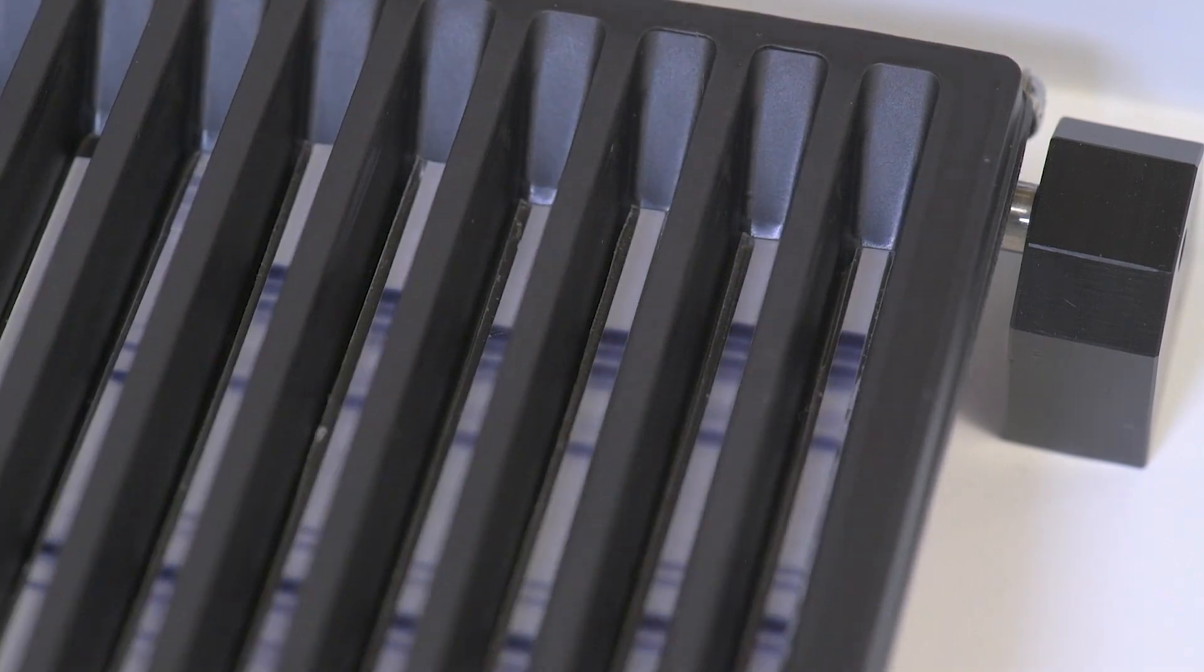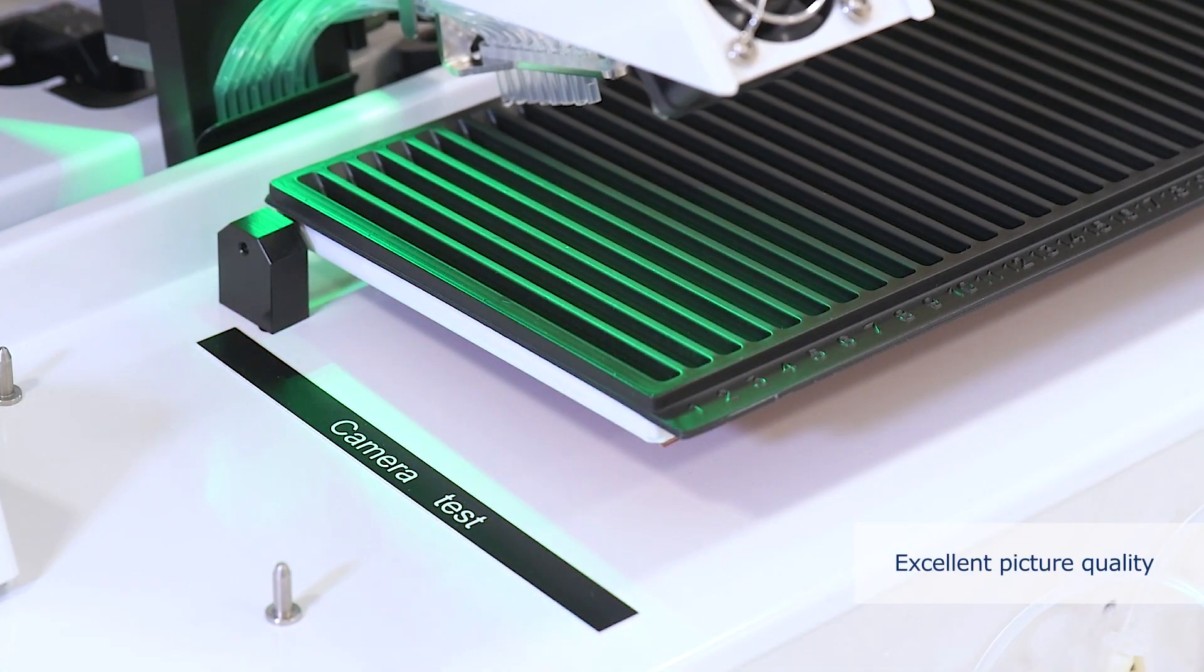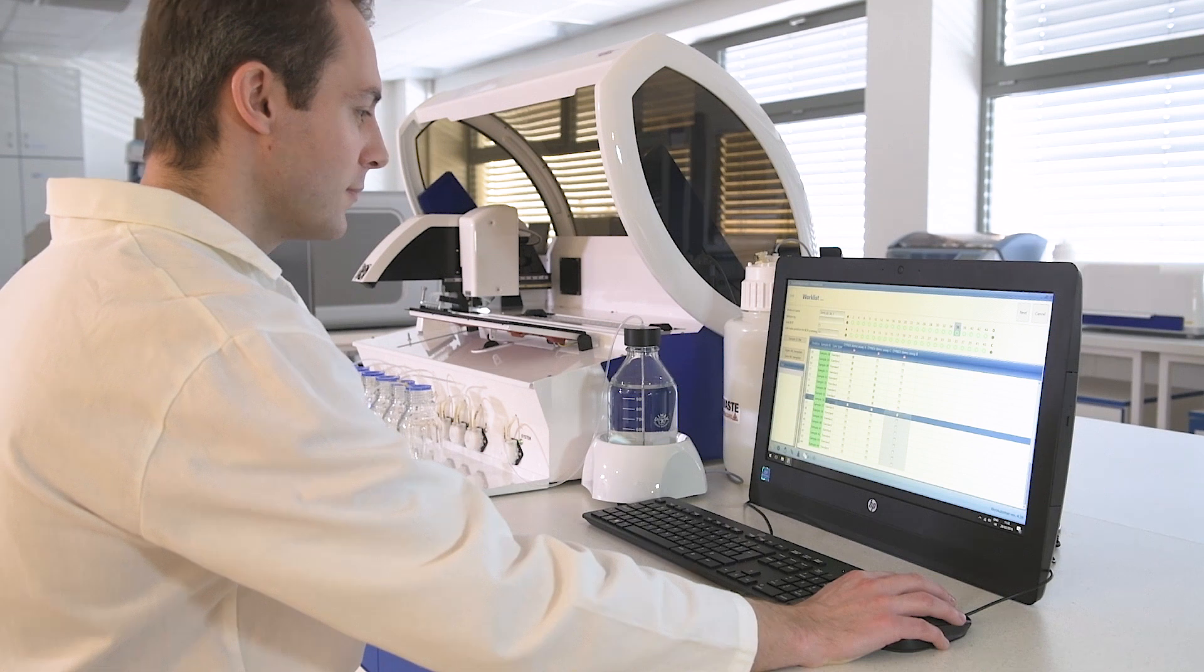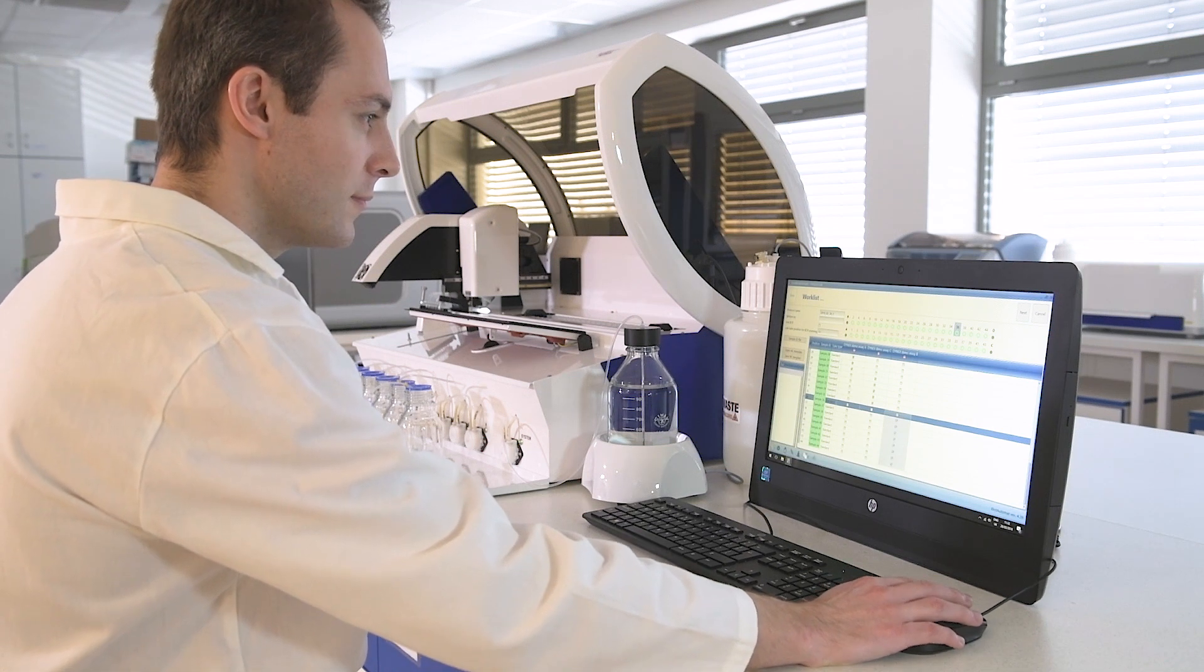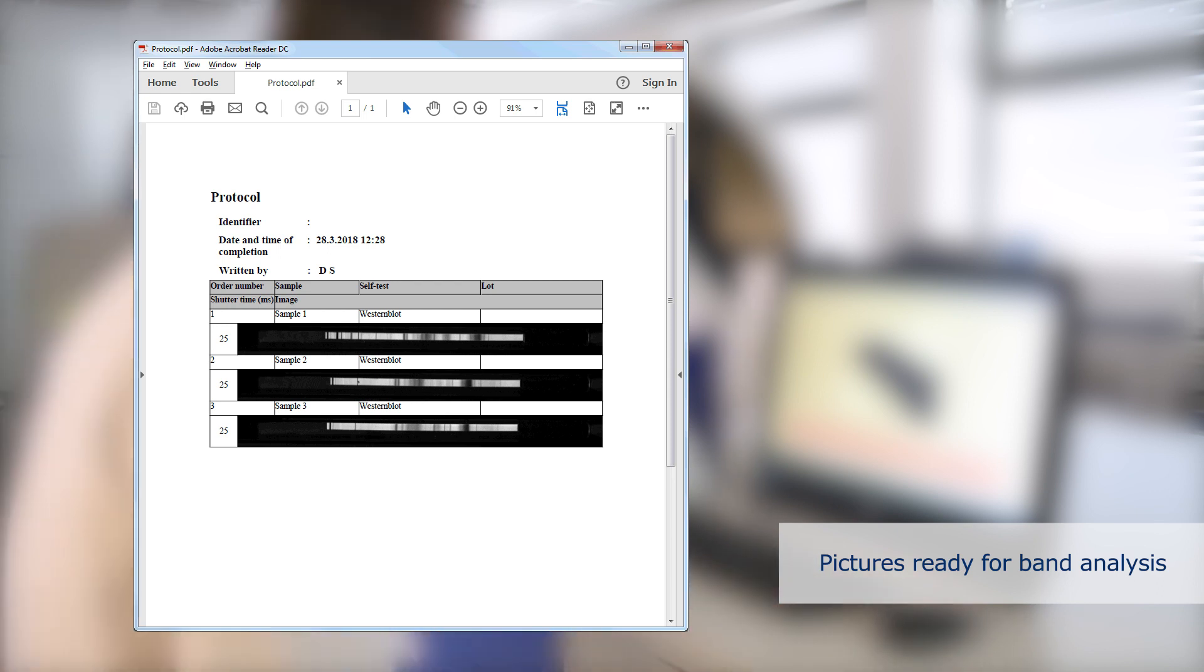The integrated CCD camera is optimized for reading the strips. We've refined the optics to provide a sharp and high quality output and to prevent reflections. This results in a remarkably pure picture ready for easy band analysis. The pictures are then exported to an evaluation software.